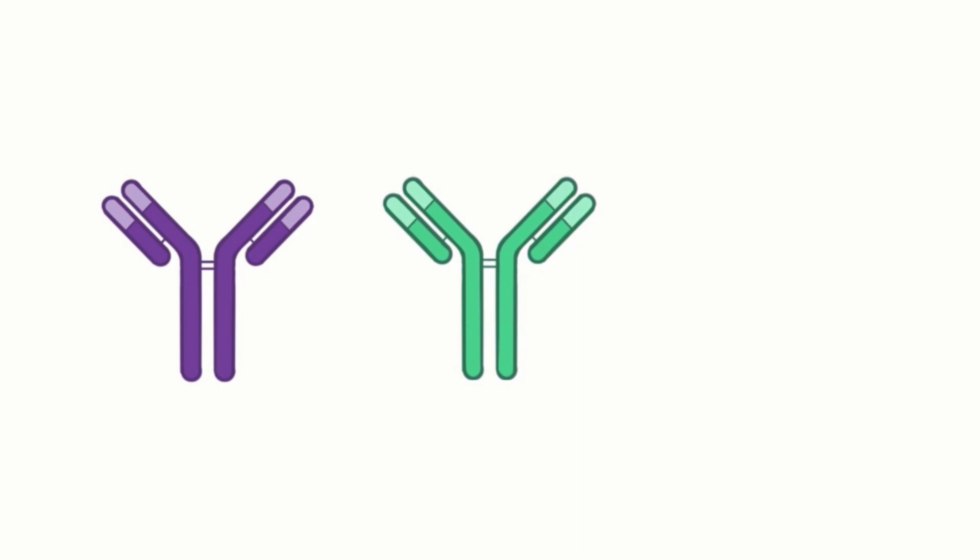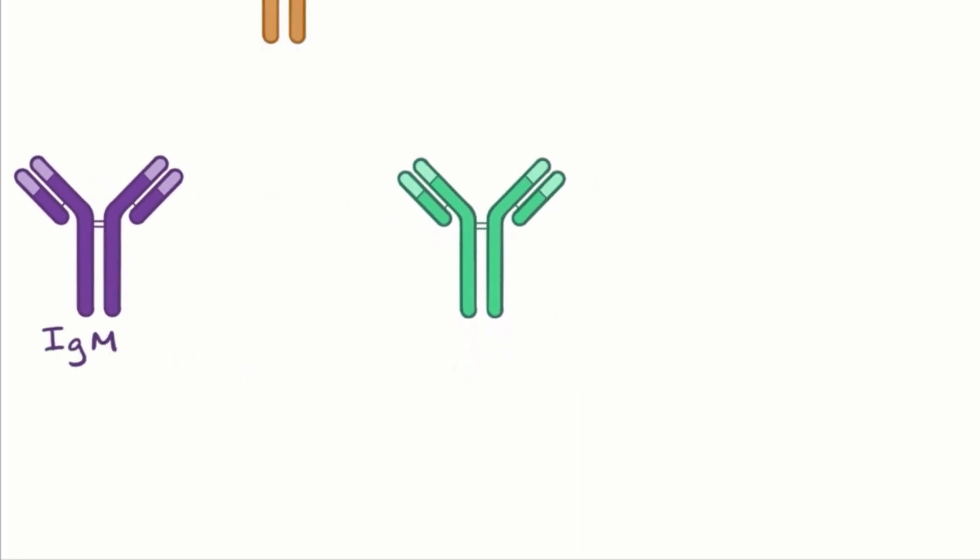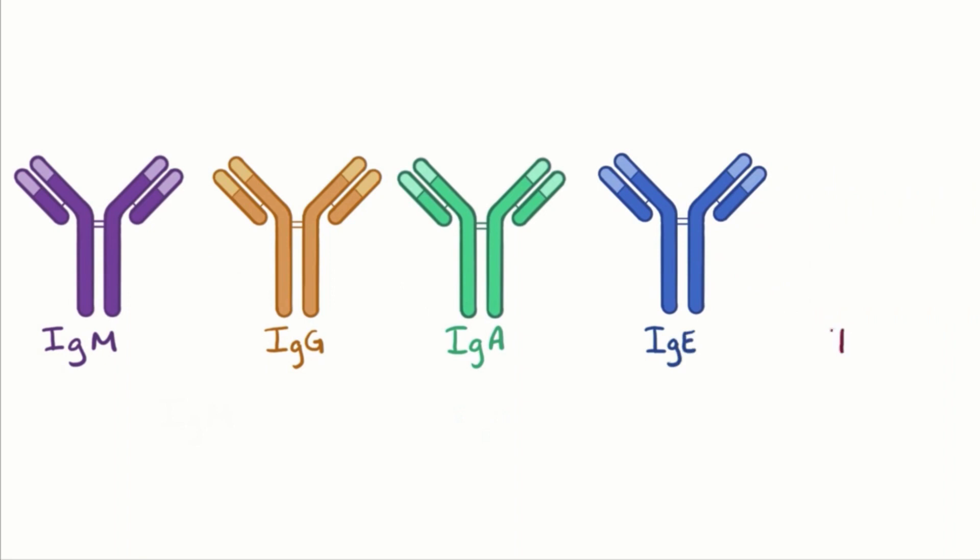There are five classes of antibodies in total: IgM, IgG, IgA, IgE, and IgD class antibodies, and each one has a slightly different job.